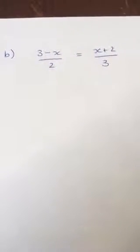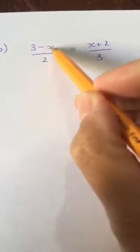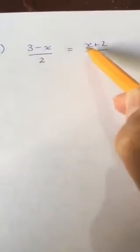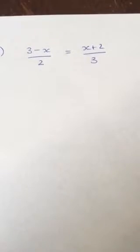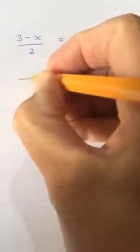So here we go with another algebraic fraction. We've got (3 - x)/2 = (x + 2)/3. So we're going to look for a lowest common denominator, and both 2 and 3 go into 6.